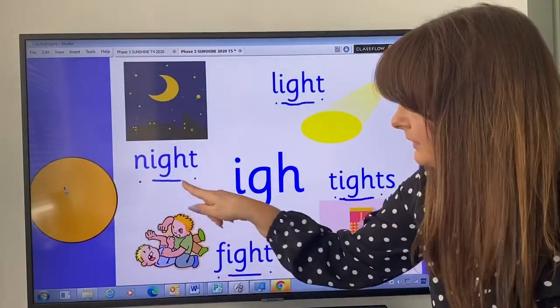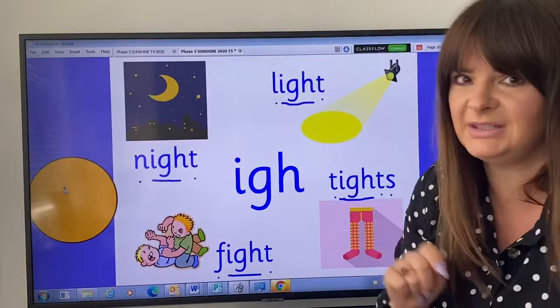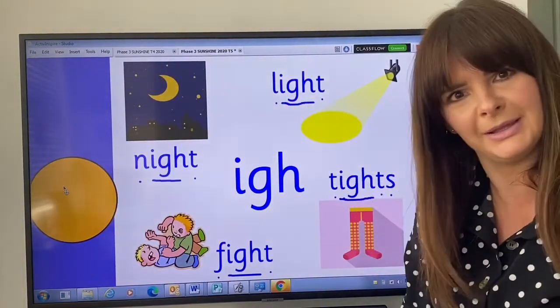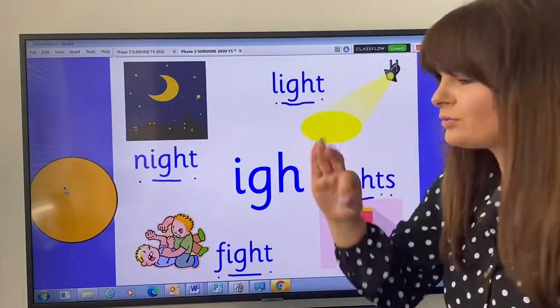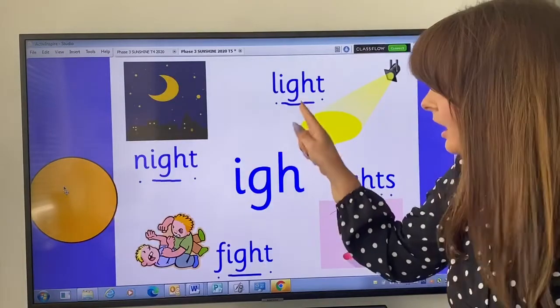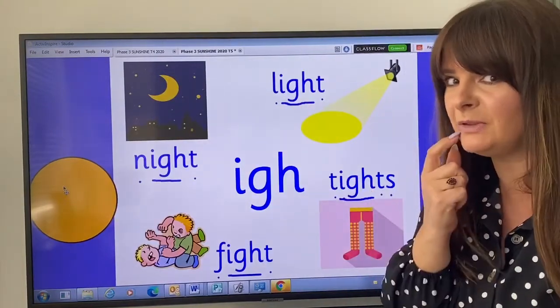Okay, so we're going to put i-g-h on our fingers, push them together and say, oh, there's best friends, special friends, to make the sound i. And when we see them in a word, we will not sound out like this: i-g-h-t, will we? Because we'll recognise those three best friends are in the word, and it's i. Okay, so read them with me again.